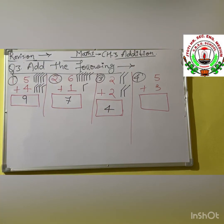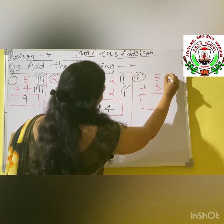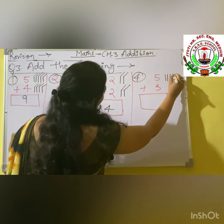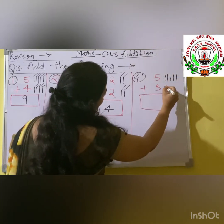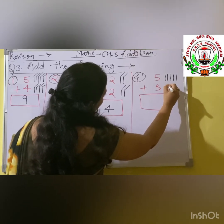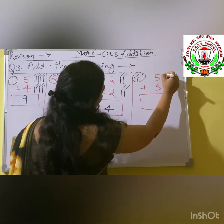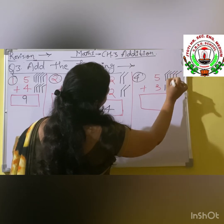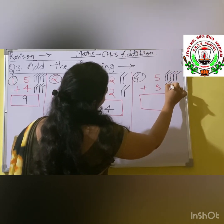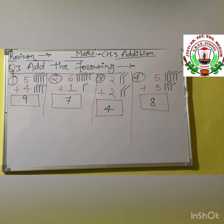Next and last one is 5 plus 3. We draw 1, 2, 3, 4, 5 strokes. Here is 3, so we draw 3 strokes: 1, 2, 3. Shall we count together? 1, 2, 3, 4, 5, 6, 7, 8. Our answer is 8. In this way you have to do this sum.